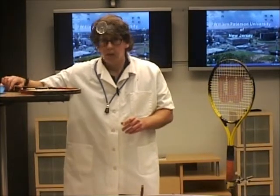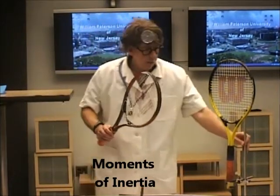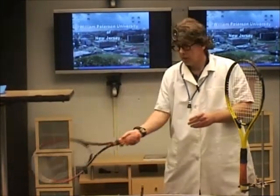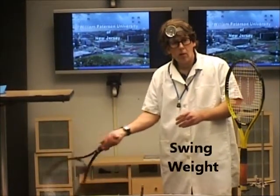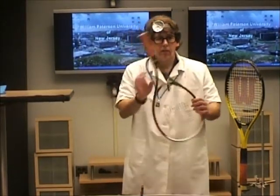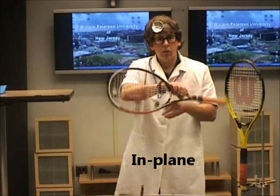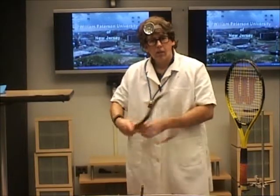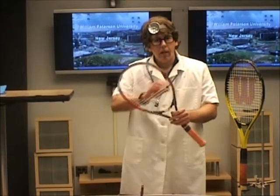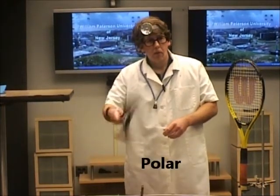We have three moments of inertia in the tennis racket. If you saw the segment where I had the water molecule showing the three moments of inertia, the same thing happens with the tennis racket. This moment of inertia is called the swing weight — it's one of the out-of-plane moments of inertia. The second moment of inertia is in-plane. And the third moment of inertia is a polar moment of inertia, where it spins out of the plane.